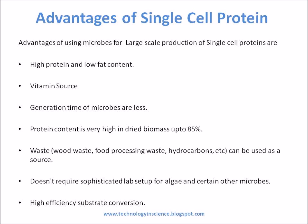Advantages of single-cell protein: microbes used for large-scale production offer high protein and low fat content. Single-cell proteins are a good source of vitamins and can be produced throughout the year. The generation time of microbes is short — they multiply rapidly, building up biomass, and more biomass means more protein. Protein content in dried biomass can be as high as 85%. Certain microbes also produce useful by-products such as organic acids. Waste can be used as a carbon source for growing microbes, providing an environmental cleanup advantage. No sophisticated lab setup is required for algae and certain other microbes, and there is high efficiency in substrate conversion.